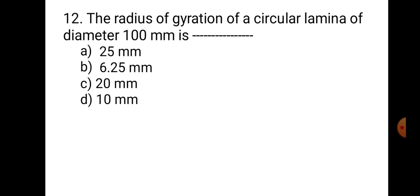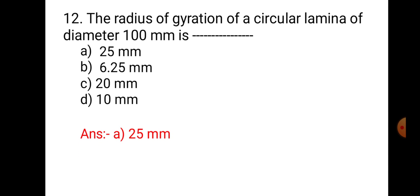Question number 12. The radius of gyration of a circular lamina of diameter 100 mm is: A. 25 mm, B. 6.25 mm, C. 20 mm, and D. 10 mm. Using the formula radius of gyration = √(I/A), substituting I = πD⁴/64 and A = πD²/4, the radius of gyration of a circle works out to D/4. Here D is 100 mm, so 100/4 = 25 mm. Hence, the correct answer is A. 25 mm.